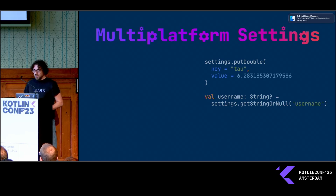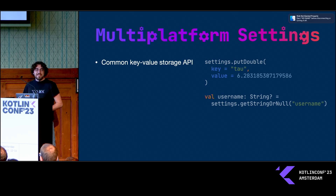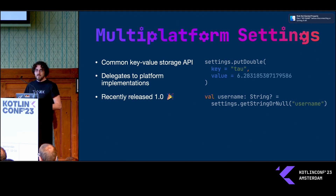Quick overview of what it is: it's a key-value storage library so that you can persist simple data — strings, primitive values — in your common code. It delegates to the different platform APIs under the hood, which helps with interop. So if you have some shared code and some platform-specific code, you can share your source of truth. I recently released the 1.0 version, so if you care about the 1.0 for stability, it is now there.